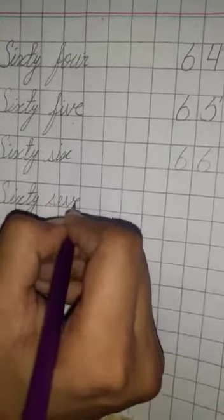S, I, X, T, Y, sixty, S, E, V, E, N, seven. Sixty-seven. S, I, X, T, Y, sixty.